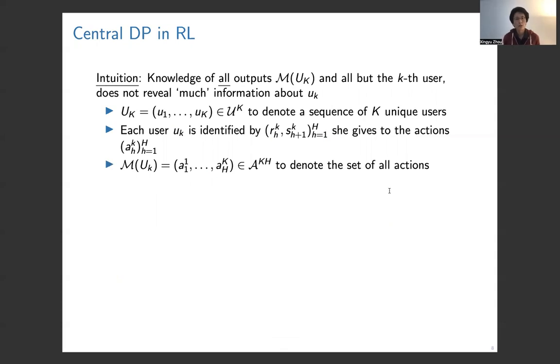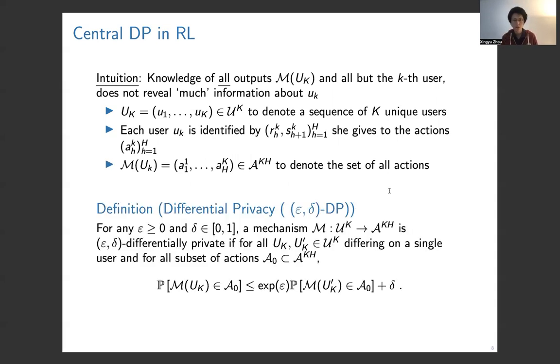Background on the formal privacy definition in reinforcement learning: First, in the central model, the key intuition is that any knowledge of the outputs of the agents and all other information about all the information except user k's information cannot reveal too much information about user k. We use capital U_k to denote the sequence of users and M(U_k) to denote the actions of the agents prescribed to the users.